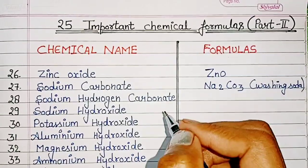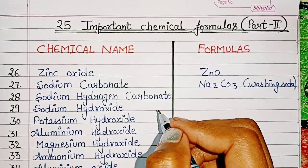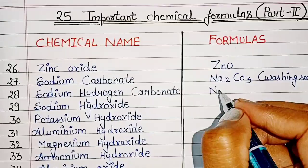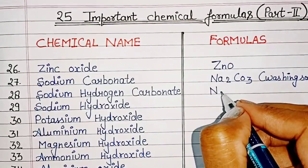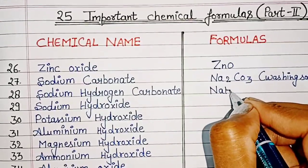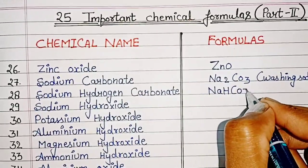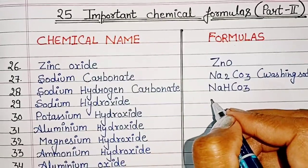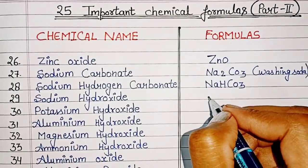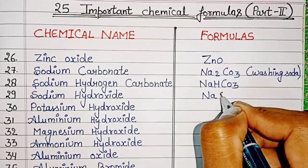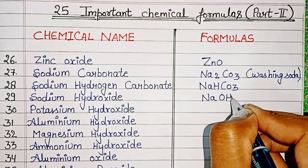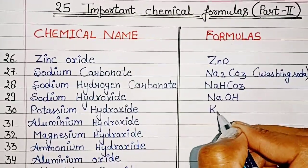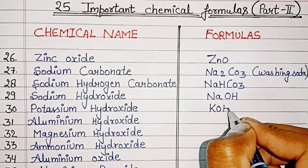Next, Sodium Hydrogen Carbonate: NaHCO3. Sodium Hydroxide: NaOH. Potassium Hydroxide: KOH.